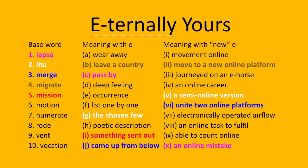An emission is something sent out, like carbon emissions or fuel emissions. But a 'mission' is something you're sent on, or a task you have to fulfil. So, an e-mission is an online task to fulfil. Emotion is deep feeling, but 'motion' is just movement. So, e-motion: movement online.